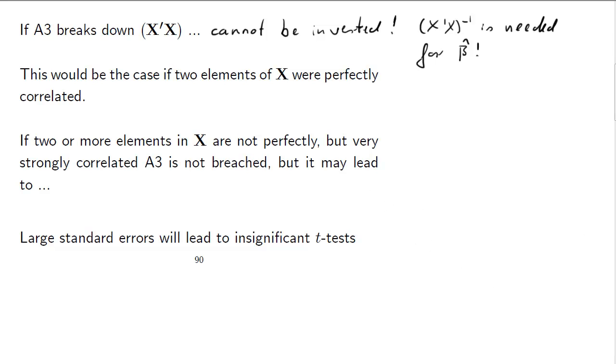Now, often we'll not have perfect relation, but just a multicollinearity. We'll just have the case where two elements in X are quite strongly related. What that leads to is inflated standard errors for beta hat. We'll look at that below, why that is.